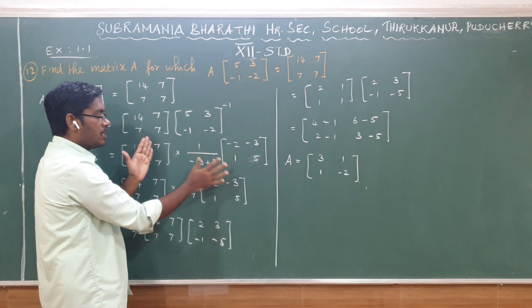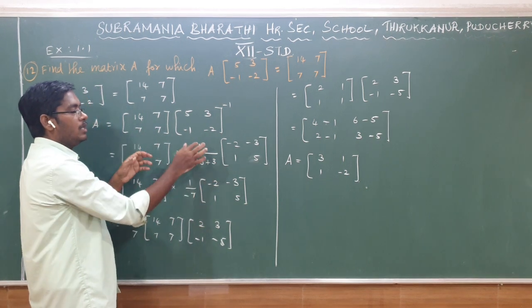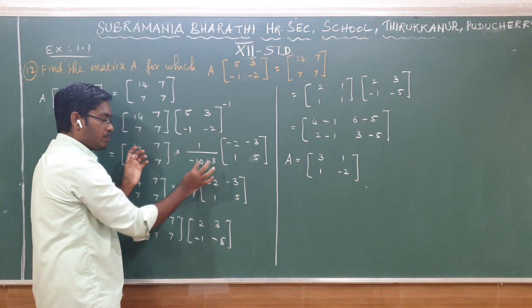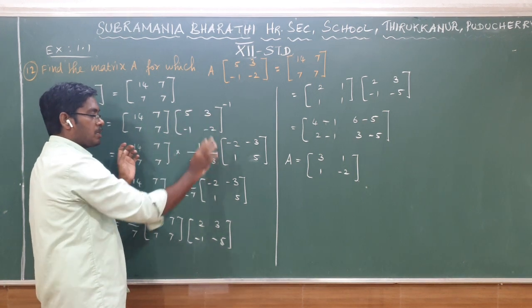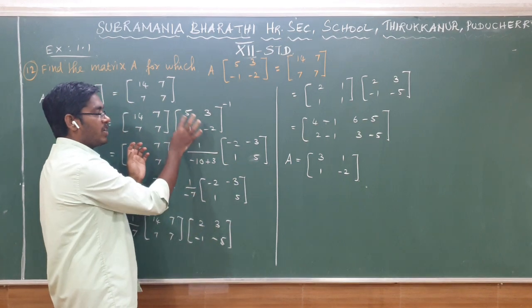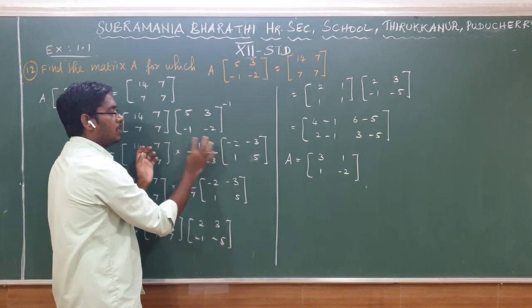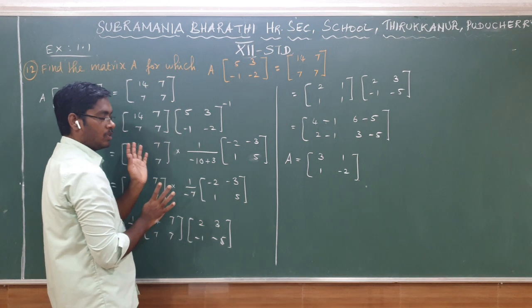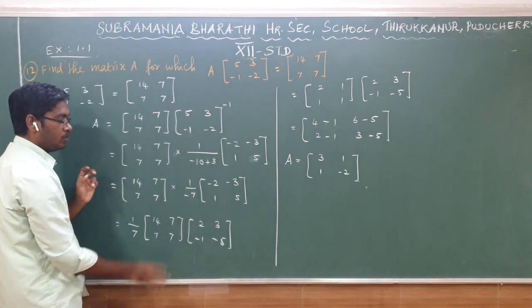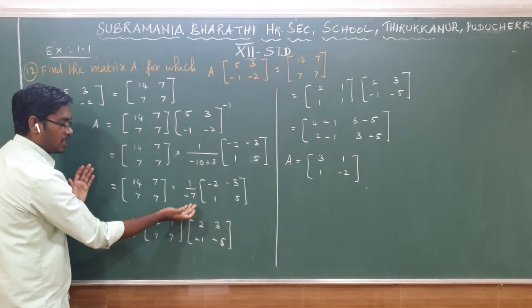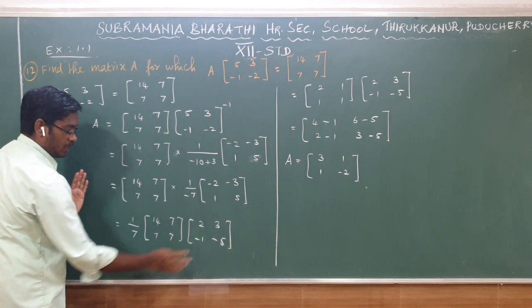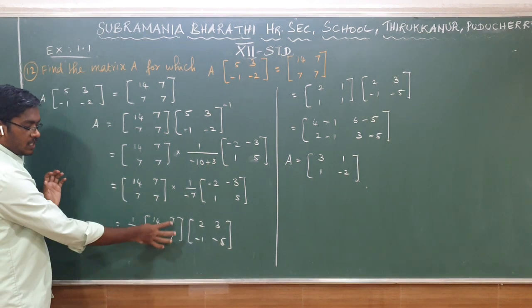So if you write the inverse directly, you will substitute it. The determinant: main diagonal is minus 10, this diagonal is minus 3. So minus 10 plus 3, this is minus 7. For the adjoint, the diagonals are swapped and the other diagonal gets a sign change. So we divide by minus 7.